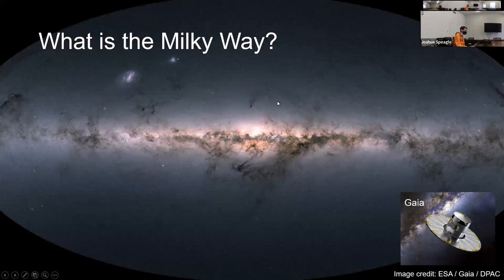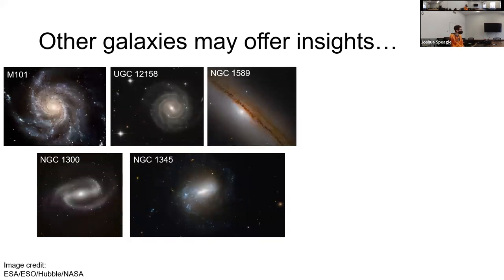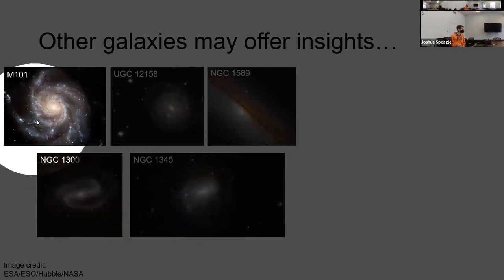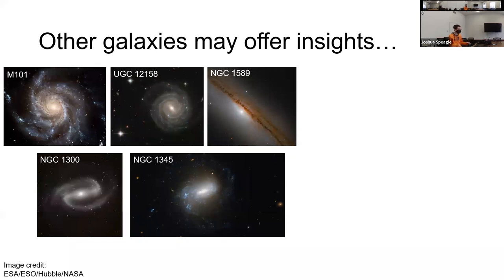If you want to understand our own galaxy, one of the best tools is to look at other galaxies. One of my research questions is trying to figure out what makes the Milky Way unique. It's like understanding an individual person by looking at the people they know. We can look at a bunch of other galaxies — here are fun examples from ESA, ESO, Hubble, and NASA archives, primarily spiral galaxies, which is what we think the Milky Way is. There's an incredible amount of structure: spiral arms, star-forming regions, dust lanes.